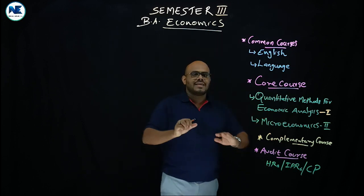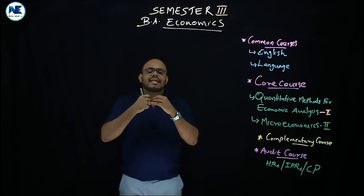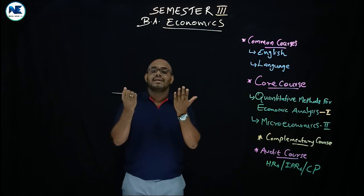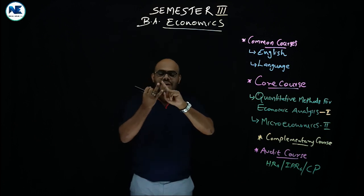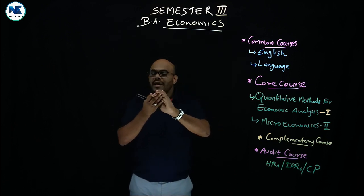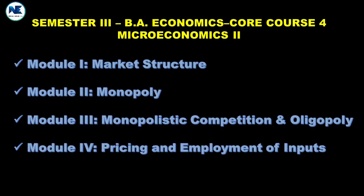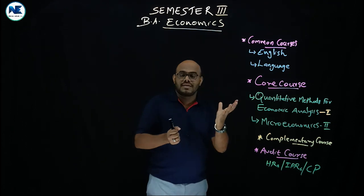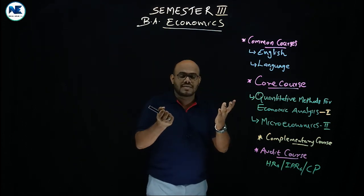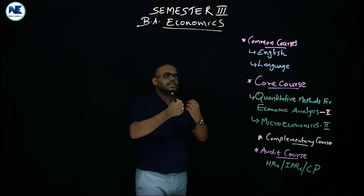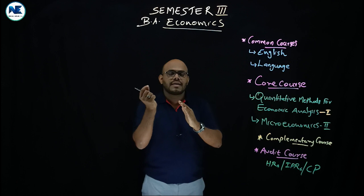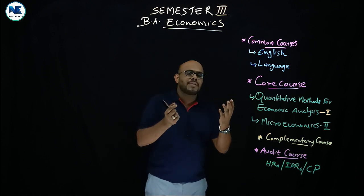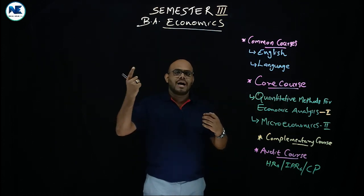The second core subject is an interesting area purely associated with the market — perfect competition, monopoly, monopolistic competition, and oligopoly. This covers short-run equilibrium and long-run equilibrium conditions, average revenue, marginal revenue, and marginal cost.